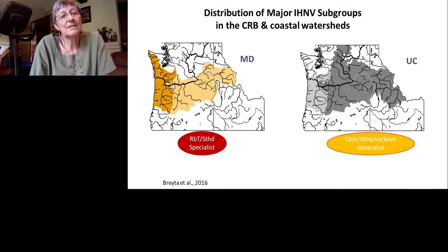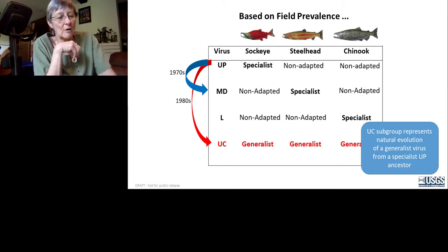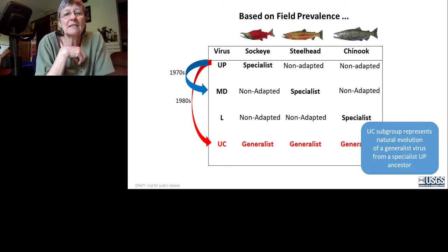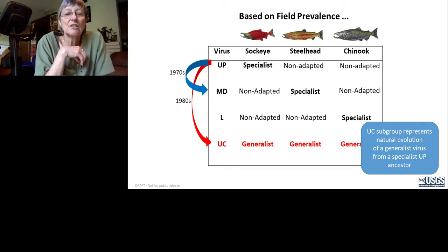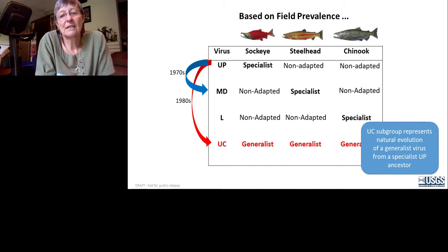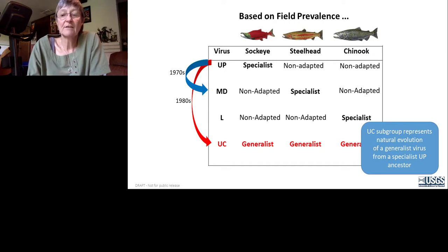This ecology led us to a matrix based on field prevalence. UP is a specialist in sockeye; MD is a specialist in steelhead; L is a specialist in Chinook — those three each have about 84–86% of isolates in their dominant host. The UC is the generalist — 62% in Chinook, 32% in steelhead, and 6% in sockeye. Importantly, UP is ancestral to MD through a host jump in the 1970s and ancestral to UC through a shift in the 1980s. UC represents natural evolution of a generalist from a specialist ancestor.